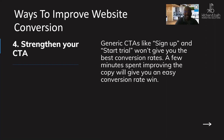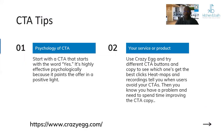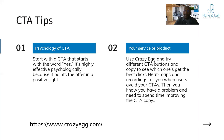Strengthen your CTA — don't settle for generic text like 'Sign Up,' 'Click Here,' or 'Start Trial.' Test CTAs that relate directly to your specific service or offering. Tools like Crazy Egg can help with CTA testing and also provide heat maps showing where visitors are clicking and spending time on your website. The darker areas on the heat map indicate higher engagement, so you can identify what's working and optimize accordingly.